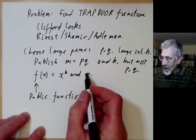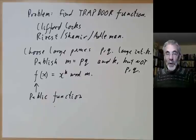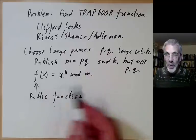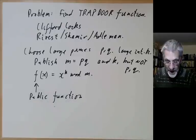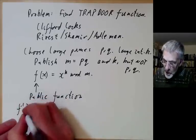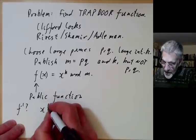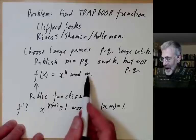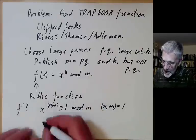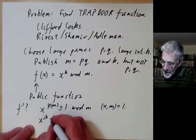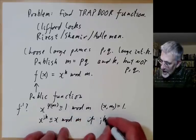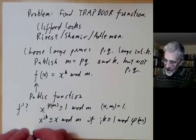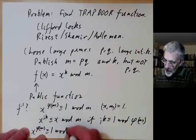We tell everyone what k and m are, and they can work out x^k mod m very quickly using something like the square-and-multiply method for fast modular exponentiation. Typically x, k, and m will all have hundreds or thousands of digits. To compute the inverse of f, we use the fact that x^φ(m) ≡ 1 mod m — at least when x and m are coprime — which is Euler's theorem.